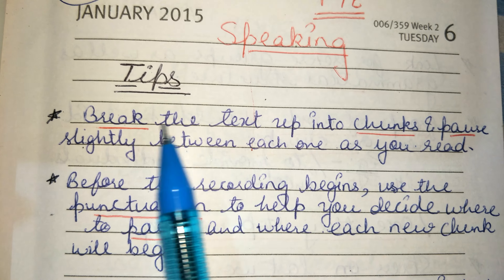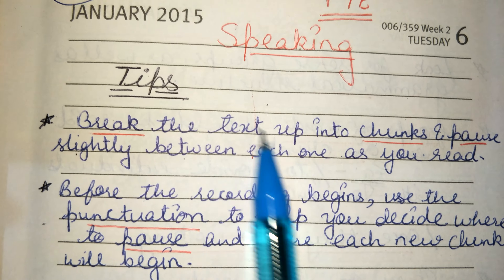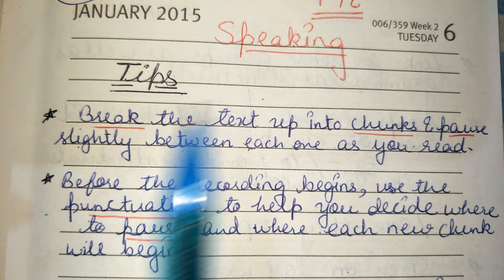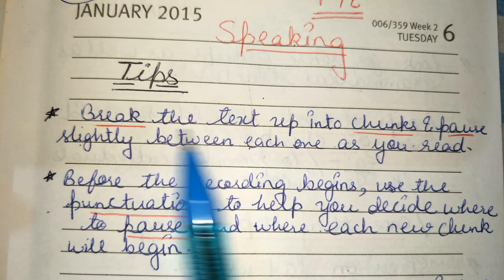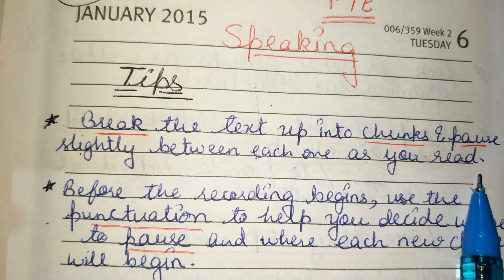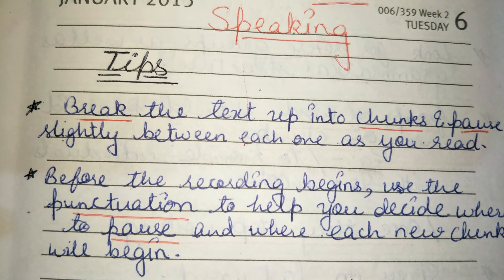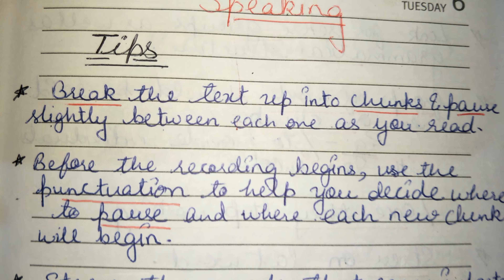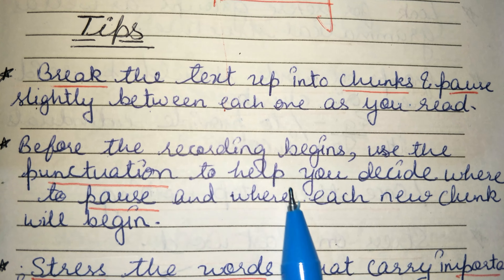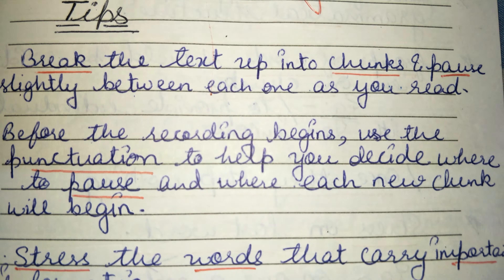Okay, let's start. The first tip is: break the text up into chunks. Chunks ka matlab — after two or three words, take a slight pause. Some students take a pause after every single word, but we should not do that. We have to divide the paragraph into chunks of two to three words, and pause slightly between each one as we read.